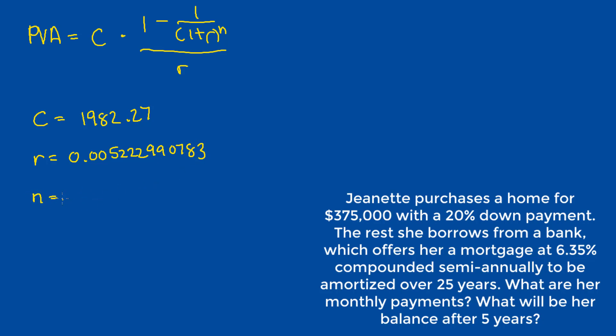And our N value is the number of years times the number of payments per year. The number of payments per year is unchanged, it's still 12. But the number of years has gone down by 5. So 25 is the total length of the mortgage, and now we're 5 years into the loan. So it's 12 times 20, which is equal to 240 payments or 240 periods. And so given these three variables, we plug them into our PVA formula and we should get $270,819.03 as our outstanding balance after 5 years have elapsed.